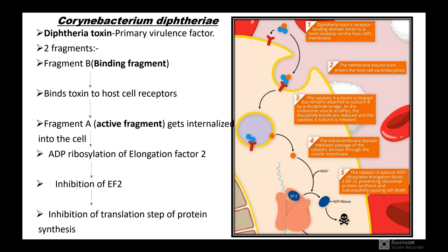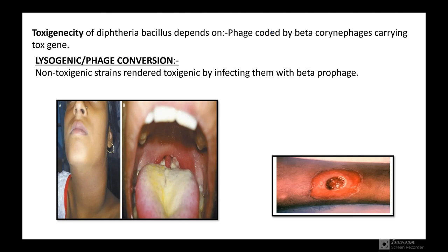Corynebacterium diphtheriae produces diphtheria toxin, the primary virulence factor. It has two fragments: Fragment B is the binding fragment that binds the toxin to the host cell receptor; Fragment A is the active fragment that gets internalized. Following internalization, Fragment A causes ADP-ribosylation of elongation factor 2 (EF-2), leading to inhibition of EF-2 and thereby inhibiting the translational step of protein synthesis. Toxigenicity depends on the phage-coded beta-corynephage carrying the tox gene via lysogenic conversion.